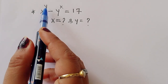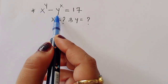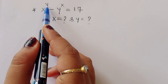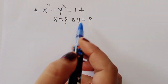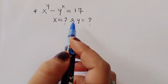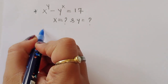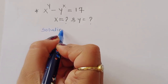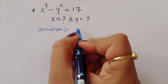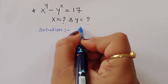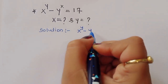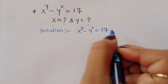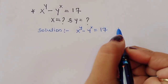The question is: given x power y minus y power x is equal to 17, we have to find out the value of x and y. Let's see the solution.